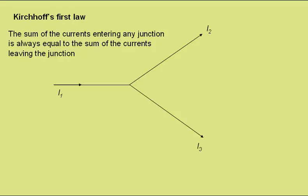So for example, in this simple junction, we have I1 entering, I2 and I3 leaving, and so I1 must equal I2 plus I3.